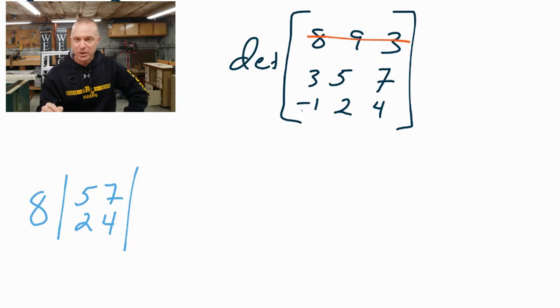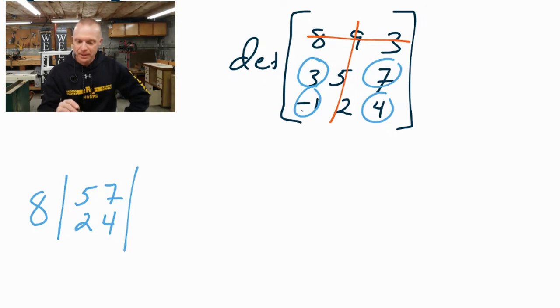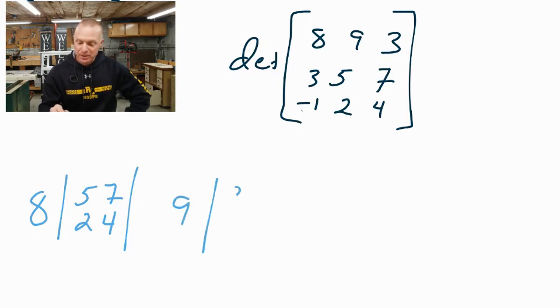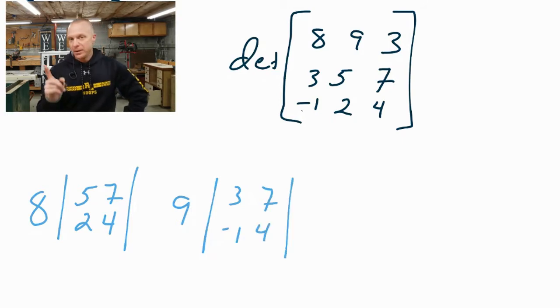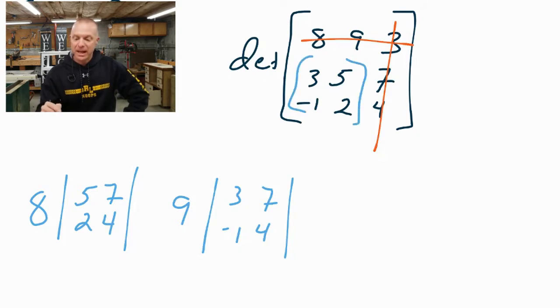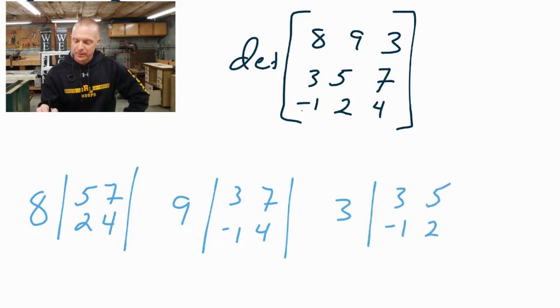We have the number 8, and we have this minor matrix of 5, 7, 2, and 4. I wrote them as a 2x2 matrix. In a moment, we will be able to find the determinant of that little 2x2. But we're not done yet because we're still expanding across the first row. When we get to the next column, we find that they cross over at the number 9 and leave behind a minor matrix. We'll take the number 9 as a coefficient and then the minor matrix of 3, 7, negative 1, and 4. Do you think you know what the last coefficient's going to be? We get to the last column, we see the number 3. That's the shared number. And then we see this minor matrix. So we got a 3, and then a minor matrix of 3, 5, negative 1, and 2.